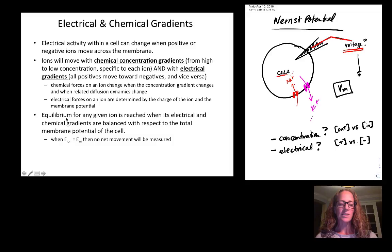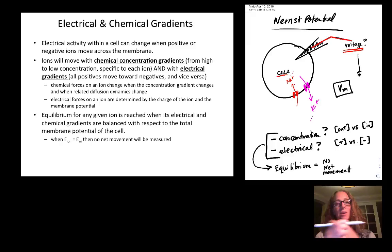These forces will balance at equilibrium. Equilibrium for any given ion, say equilibrium for potassium, will be reached when its electrical and chemical gradients are balanced with respect to the total membrane potential of the cell. Another way of saying this is that when the equilibrium potential for the ion is the same as the voltage of the membrane, then no net movement will be measured. That doesn't mean that nothing's moving, it just means that it's moving equally in both directions and these forces are balanced.